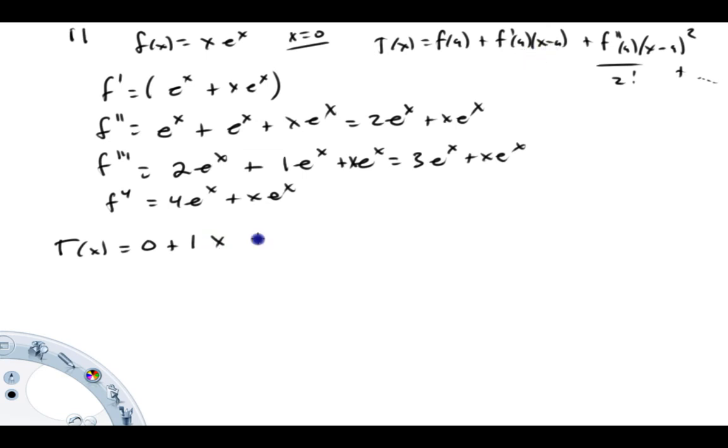And again the a is zero, plus f double prime at zero. So I take a look at this, I put zeros in, this is gone because of this, e to the zero is one, so that's going to be two times x squared over two factorial, which is two.